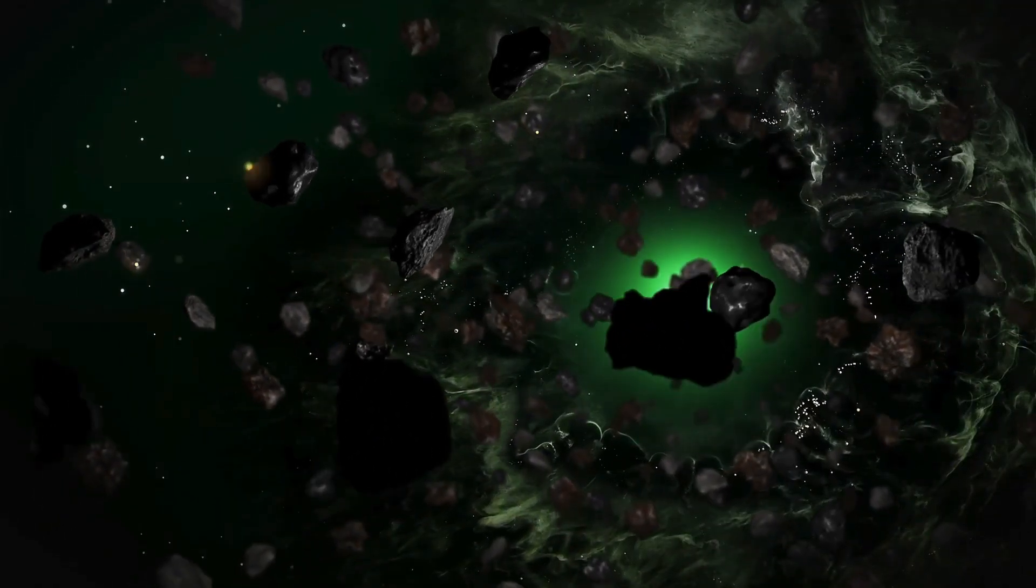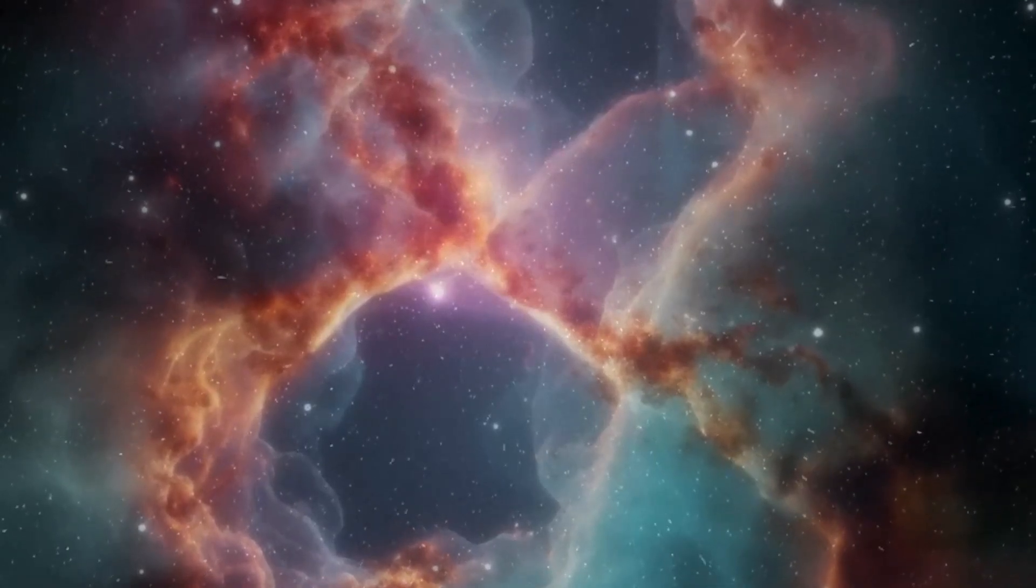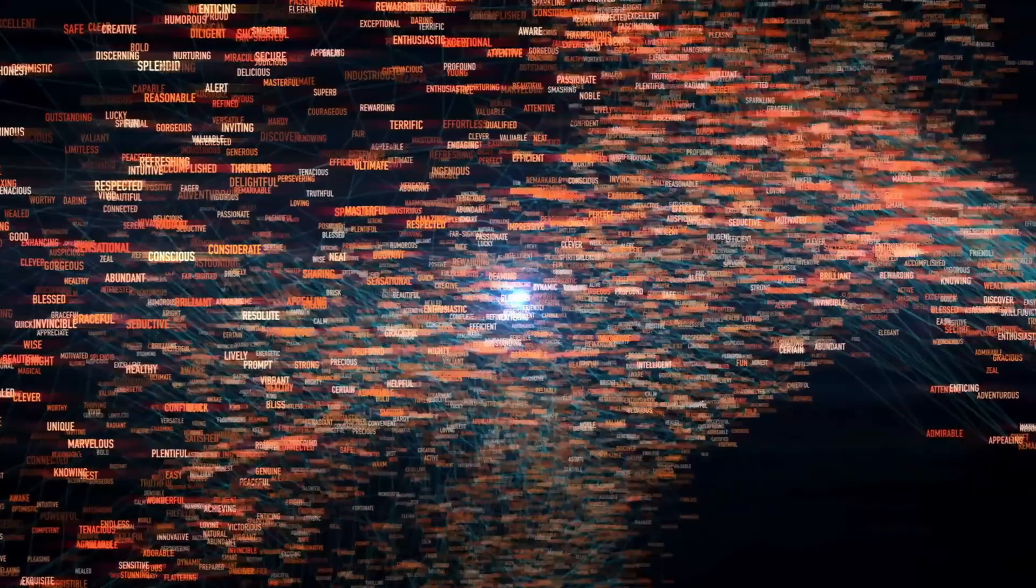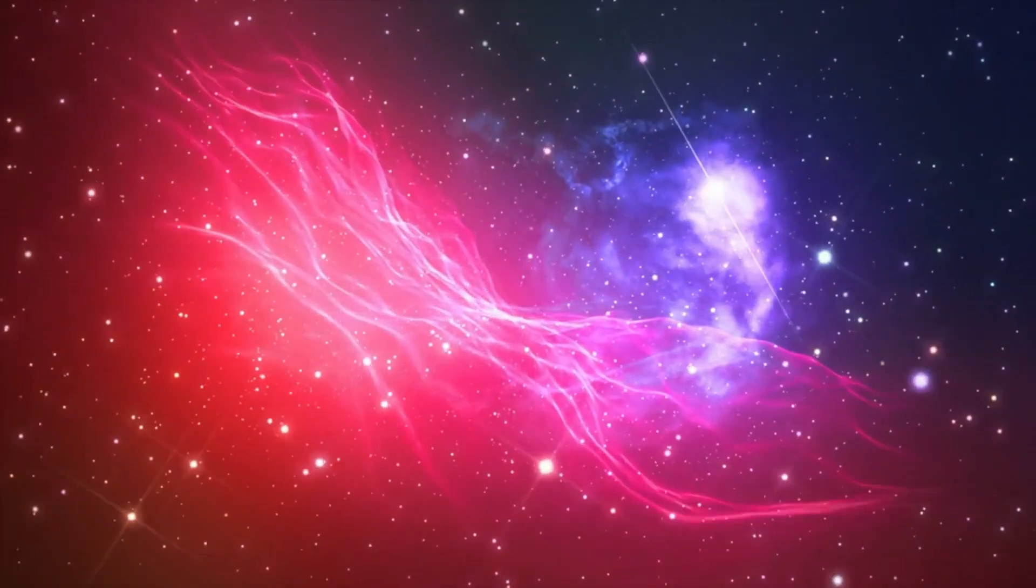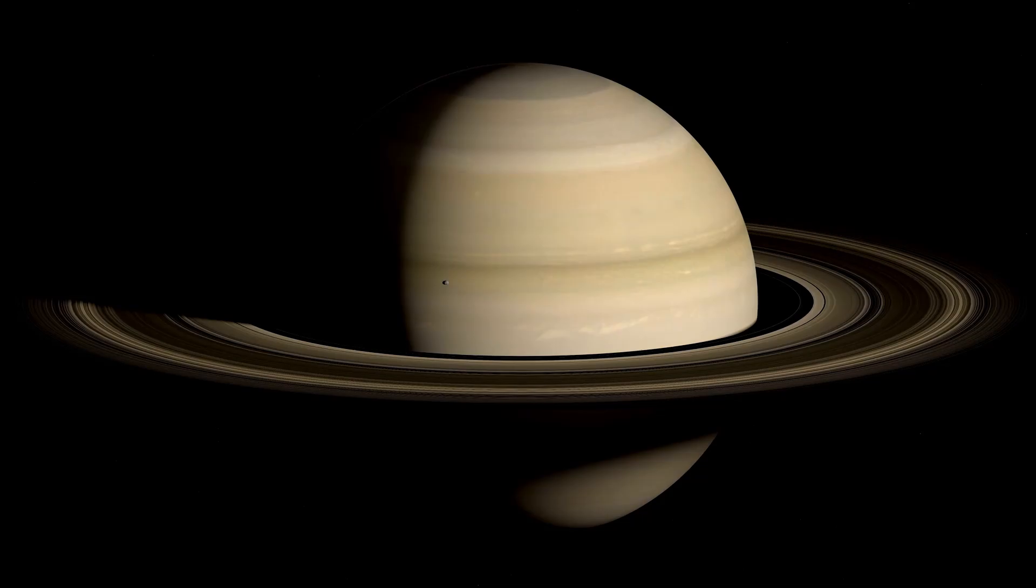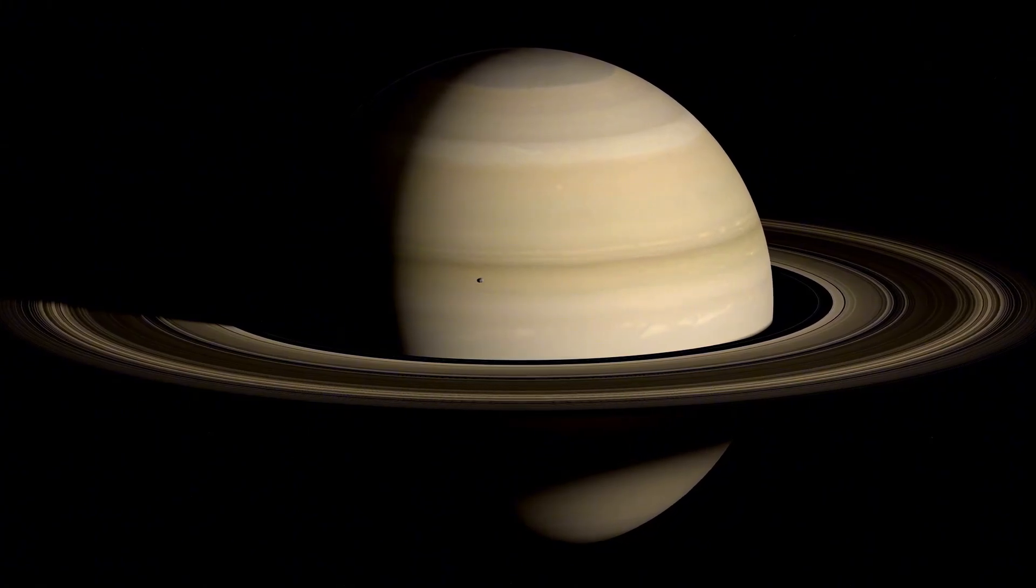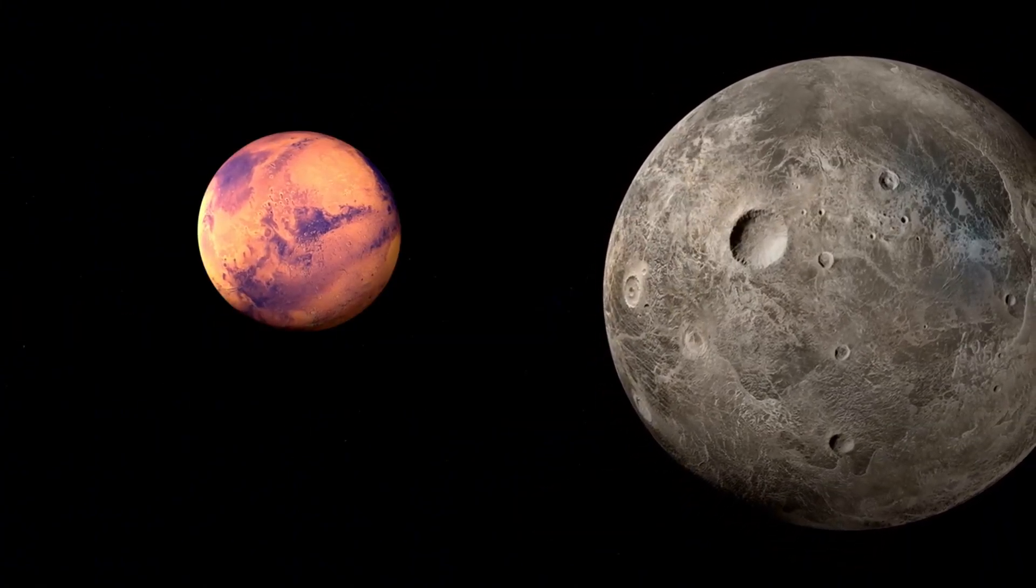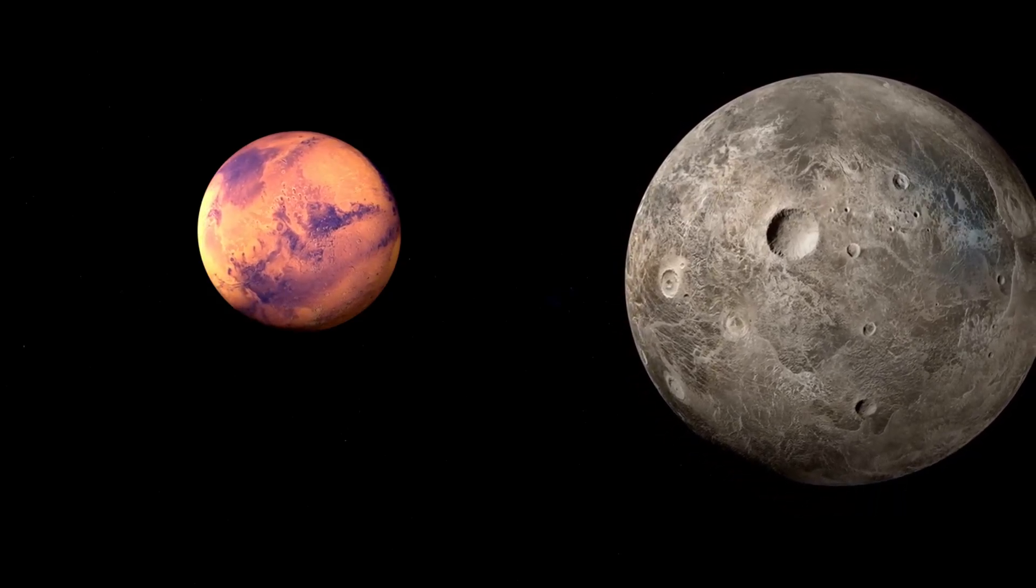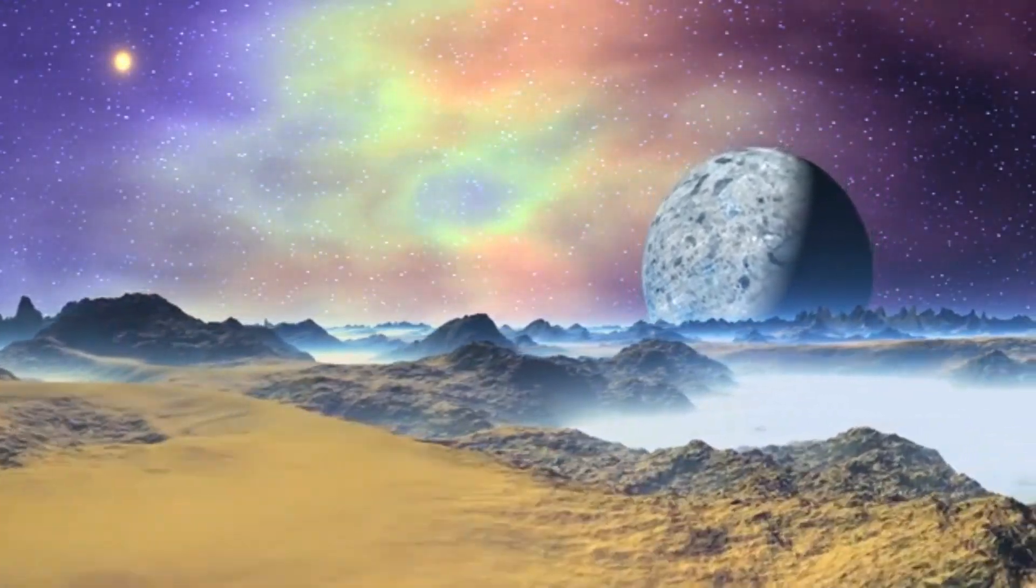Solar flares are sudden, intense explosions of radiation brought about by the arrival of magnetic energy related to sunspots. They discharge a colossal amount of energy and light, frequently as X-rays and ultraviolet radiation. Consider them explosions of brilliant light and intensity on the sun's surface, like a huge blast. In contrast, CMEs are gigantic arrivals of solar wind and magnetic fields from the solar corona. They can be considered giant bubbles of gas and magnetic fields being removed into space. When a coronal mass launch happens, it sends billions of tons of solar particles into space at incredibly high rates.